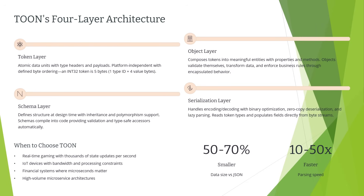The fourth and final layer is the serialization layer, which handles encoding and decoding. This is the pipeline that converts in-memory objects to byte streams and vice versa. TOON serialization is highly optimized — it uses binary encoding with minimum overhead, no field name strings, no escaping. The deserializer reads the token type, knows the expected structure from the schema, and directly populates object fields. Many implementations also support features like lazy deserialization, where you only parse the parts of data you actually access, and zero-copy deserialization, where you read data directly from the byte buffer without copying to new objects.